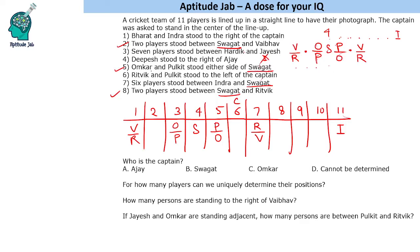It is given that Rithvik and Pulkit stood to the left of the captain. Pulkit is already on the left-hand side. Rithvik also has to be on the left-hand side, so the position to the right of Swagat cannot be Rithvik — that will be Vaibhav, and the left position will be Rithvik. Their unique positions are now determined, and we still have to place seven players, including Hardik and Jayesh.